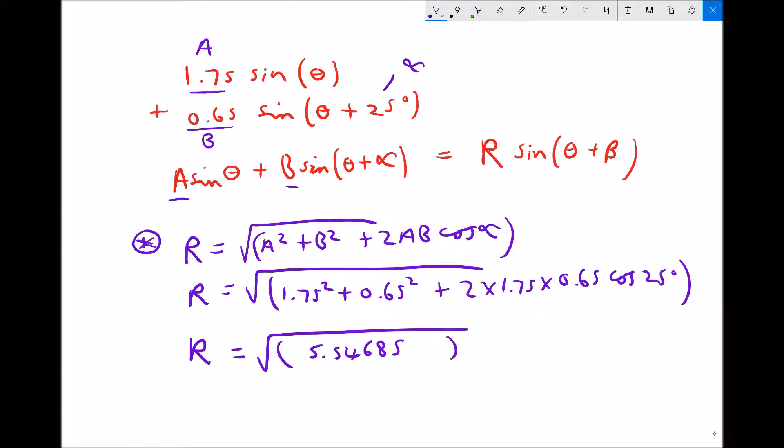I'm going to leave the full calculator answer in my calculator and then I'm going to square root the answer. So the square root of the answer gives me 2.355 to 3 decimal places.